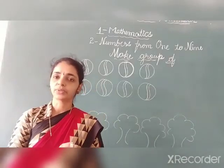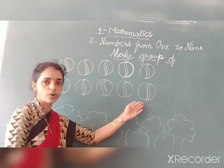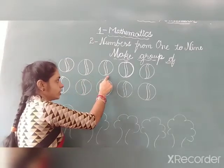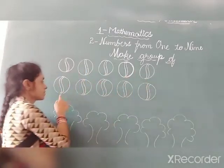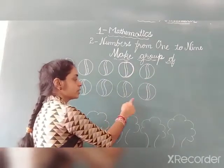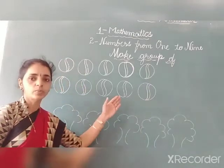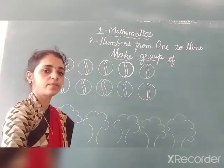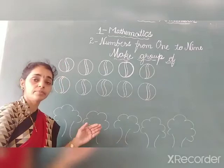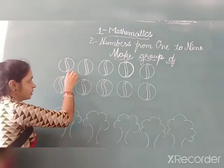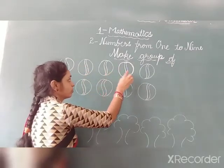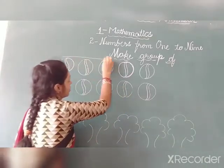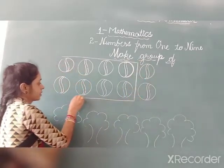I have a few objects here, so let us count them first: one, two, three, four, five, six, seven, eight, nine, ten. I have ten objects here. Now I will take number eight and make a group of eight: one, two, three, four, five, six, seven, eight. This is our group of eight balls.